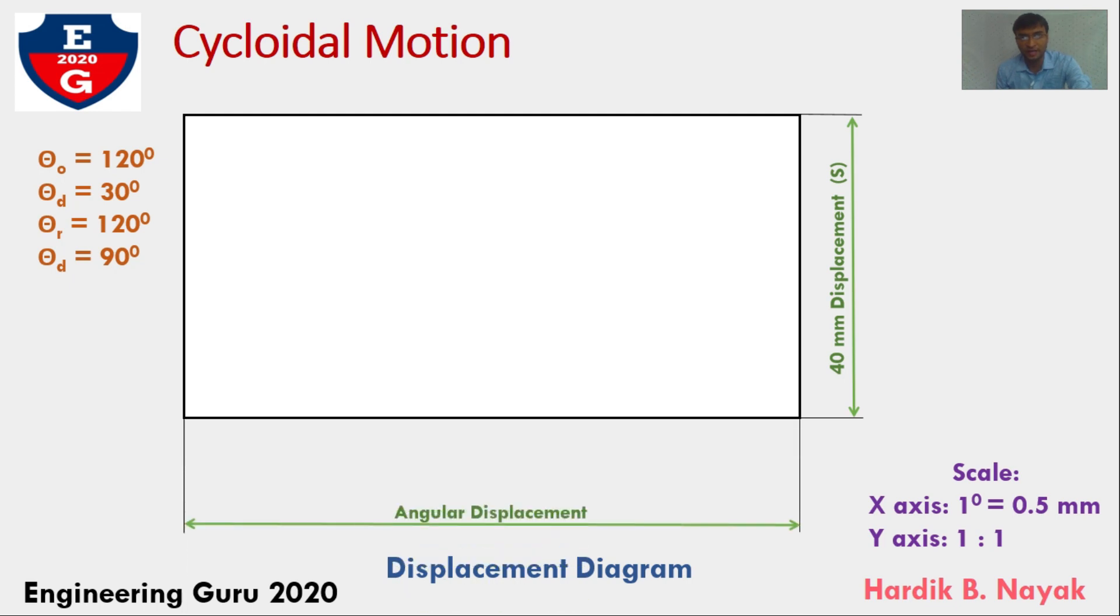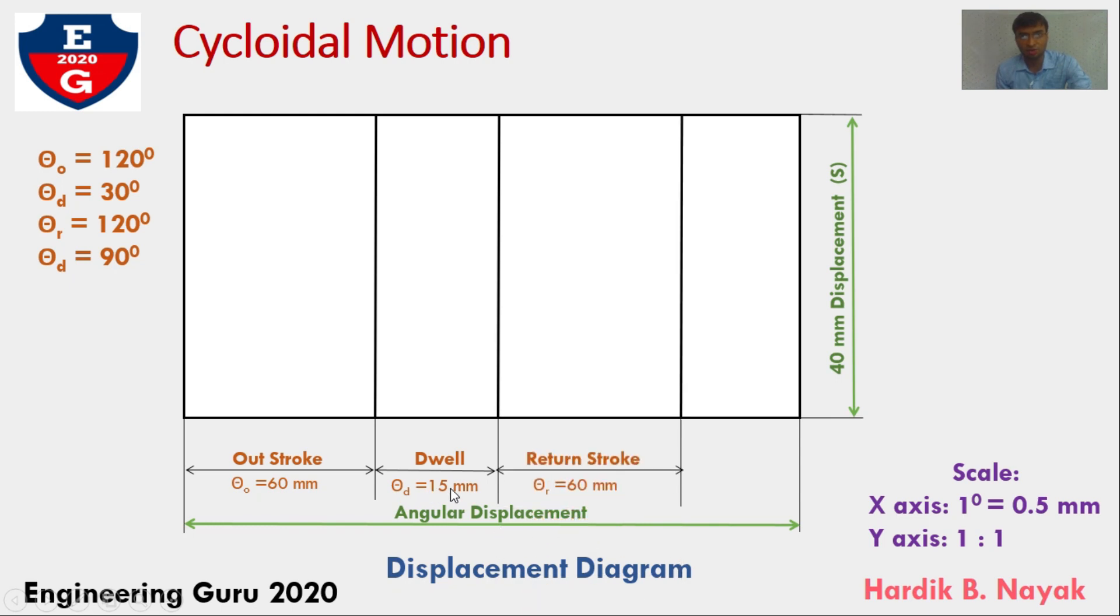It would be 180 mm as per scale. Here, I am taking outstroke theta o equal to 120 degree, theta d that is dwell equal to 30 degree, theta r that is return stroke equal to 120 degree, and final dwell equal to 90 degree. Here, outstroke it would be 60 mm, then dwell 15 mm, third return stroke 60 mm, final dwell 45 mm from the x-axis scale.